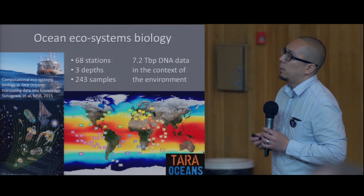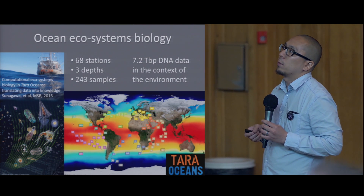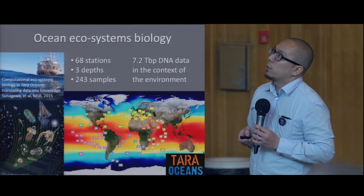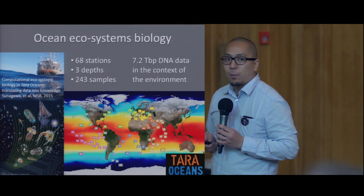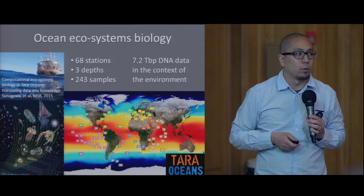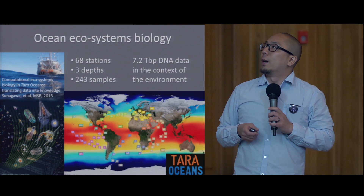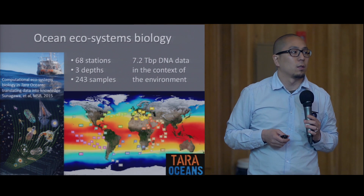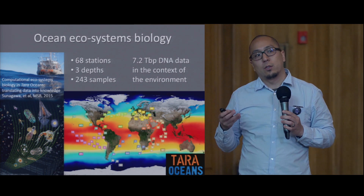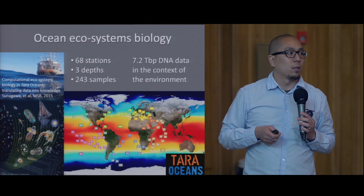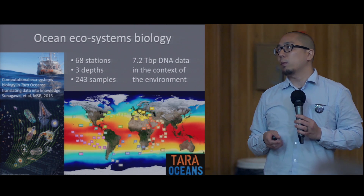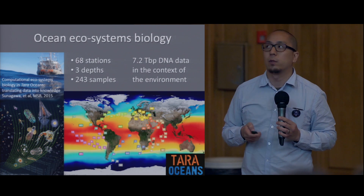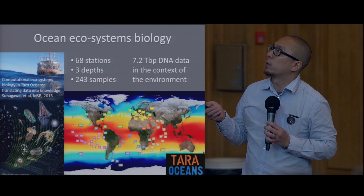In our work, we had data from 68 stations from all over the world, covering all major oceanic regions. We collected samples at three different depth layers, giving us 243 samples in total. We generated 7.2 terabase pairs of DNA data — the EBI confirmed this is the largest systematically collected metagenomic dataset that exists so far. It contains more data than the human gut microbiome project, which we are also involved in. This is quite a remarkable amount of data.